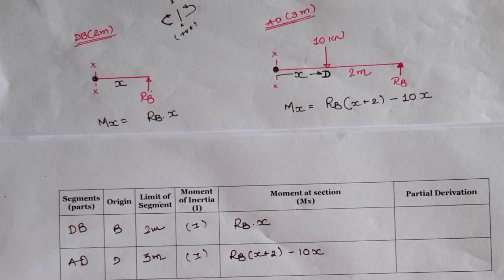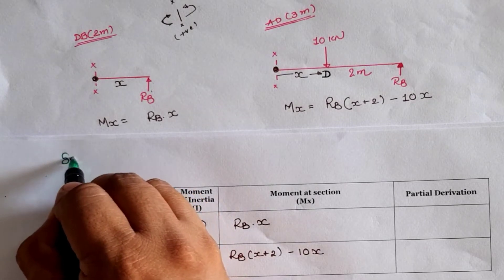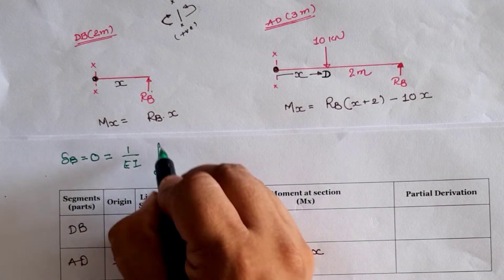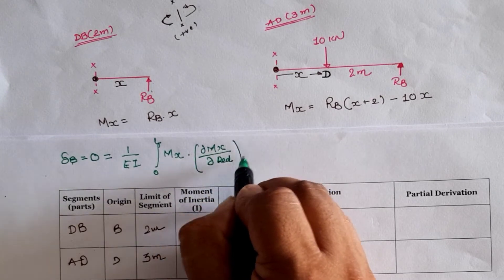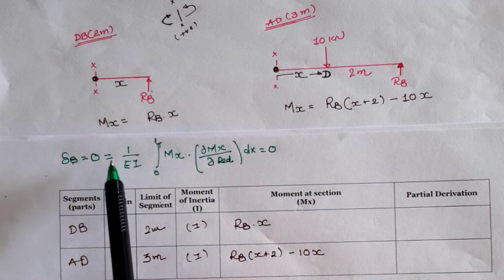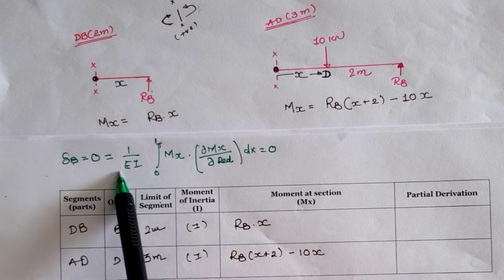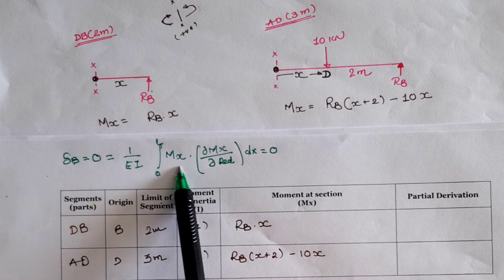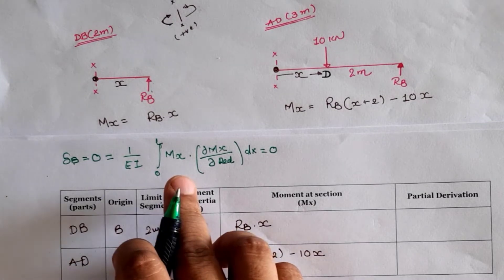Castigliano's second theorem states that the total strain energy at the location of zero deflection is zero. At any support, total deflection is zero unless sinking is given. Mathematically, the total deflection at the redundant location equals (1/EI) times the integral over the entire span of M times (∂M/∂redundant) dx, and this must equal zero.